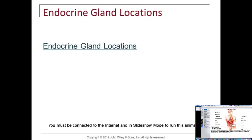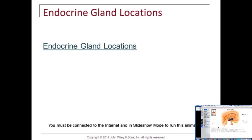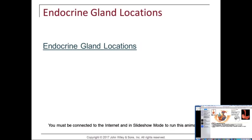Clicking on the hypothalamus in the interactive diagram reveals its many functions: regulating temperature, thirst, and hunger — so many eating disorders originate in the brain. It regulates sexual behavior and defense reactions, synthesizes hormones that either stimulate or inhibit pituitary hormone secretion, produces oxytocin and ADH. The hypothalamus is not to be confused with the thalamus, which is the relay station for all sensory input except smell. The hypothalamus regulates the autonomic neural system through sympathetics and parasympathetics.